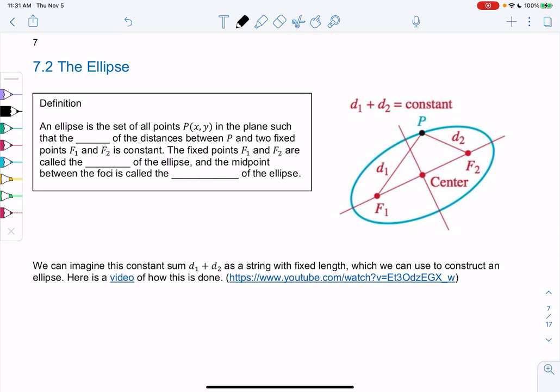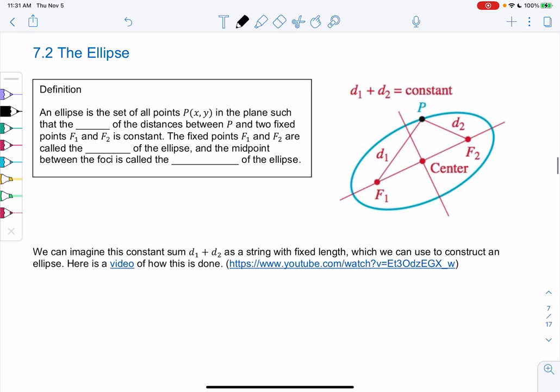Section 7.2, the ellipse. We'll look at that next shape in the conic sections. An ellipse is the set of all points in the plane such that the sum of the distances - so now we're going to look at a sum rather than two pieces being equal. We're going to look at the sum of two distances between two different foci, F1 and F2.